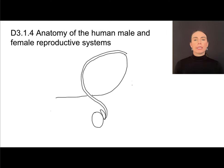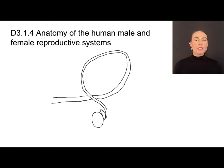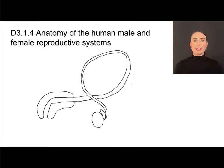The sperm duct goes in this rollercoaster orientation because it's moving around the urinary bladder. The urinary bladder sits right in here, and as the sperm travels through, it will be added to fluid from two different glands. The sperm duct will eventually go out through the penis. The urethra, which is what this tube is, is an opening inside the penis.